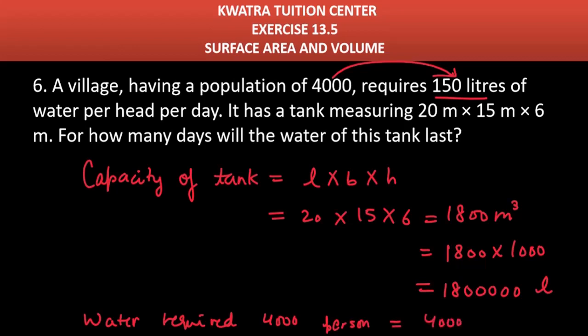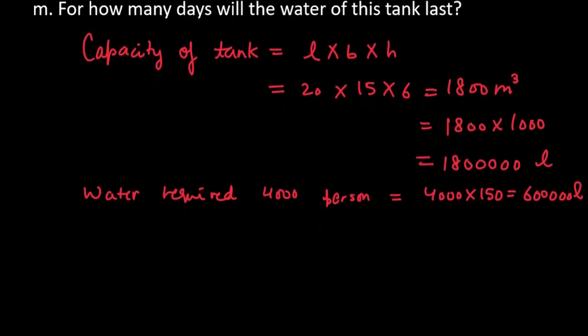Now we calculate the total water required: 4,000 into 150 equals 600,000 liters in total. To find the number of days, divide capacity of tank by water required by 4,000 persons.